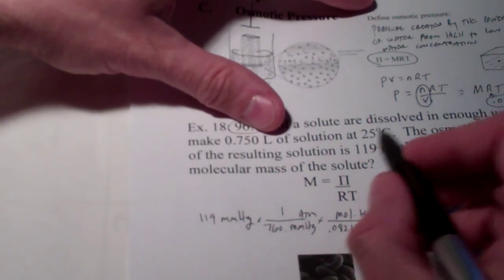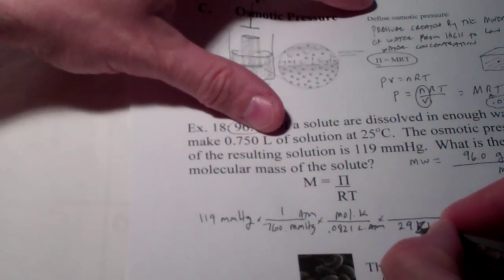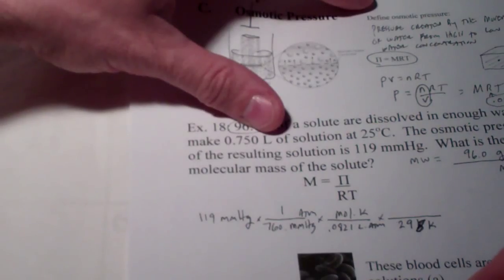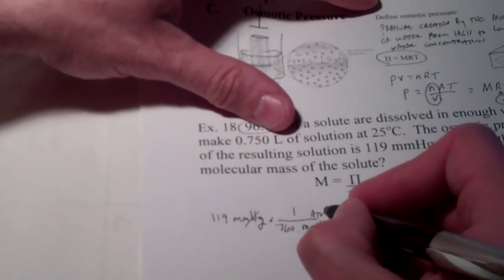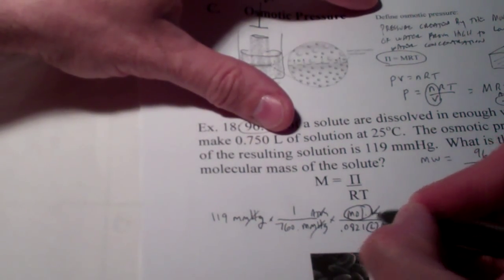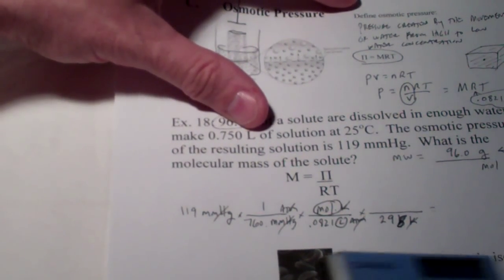Now, that's 25 degrees Celsius. But, remember, we need to Kelvinize that. So, that's 298 Kelvin, kiddos. So, millimeters of mercury divide out. Atmospheres divide out. Kelvin divides out. I'm left with moles per liter, which is my unit for molarity. So, let's see what that is.